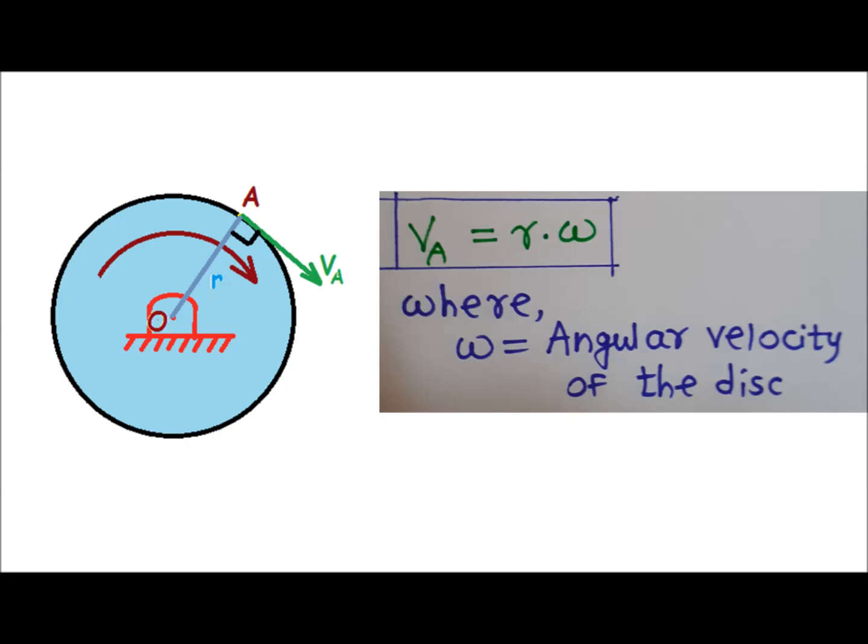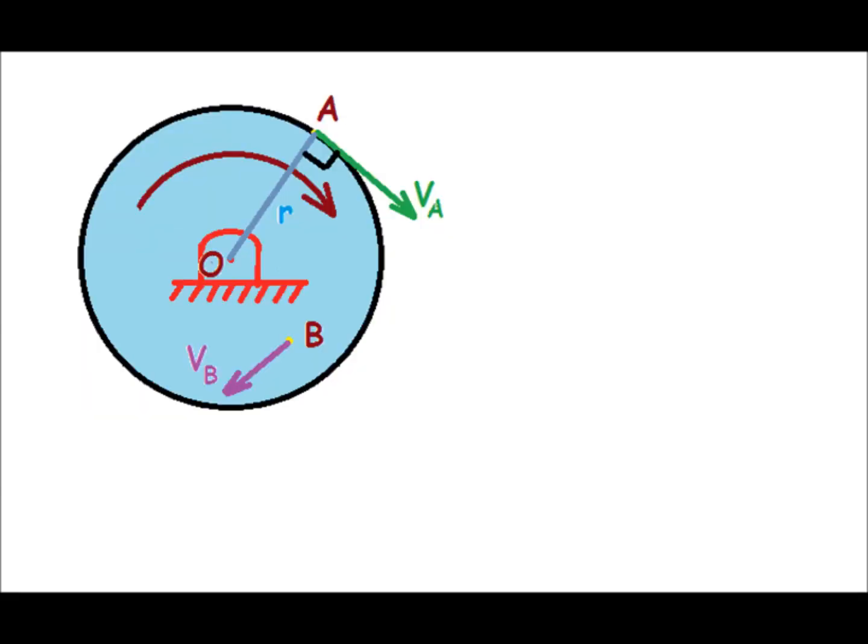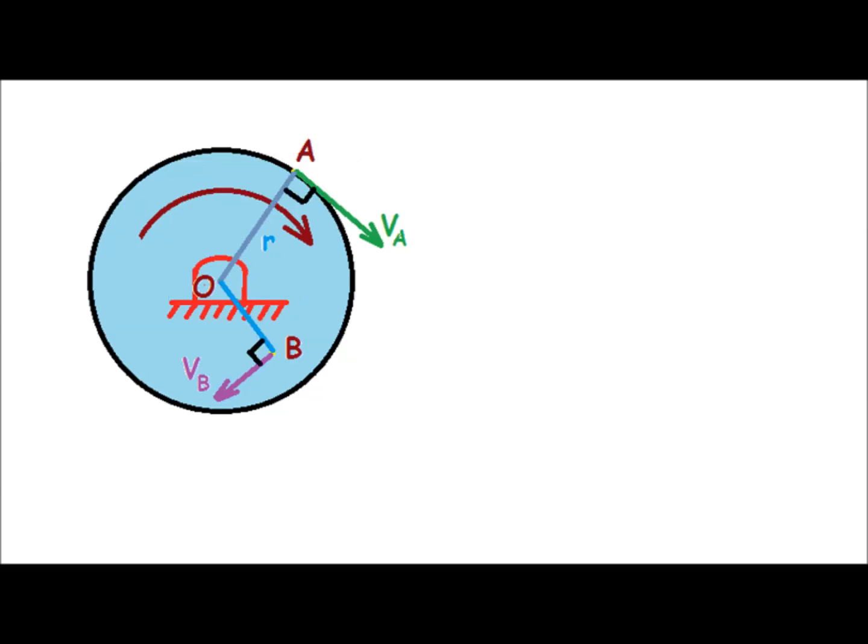And VA is perpendicular to radius, or VA is perpendicular to OA, and omega is the angular velocity of the disk. Similarly, for another point B on the disk, velocity at point B, VB, will equal OB into omega, and it will be perpendicular to OB in the direction shown in the figure.